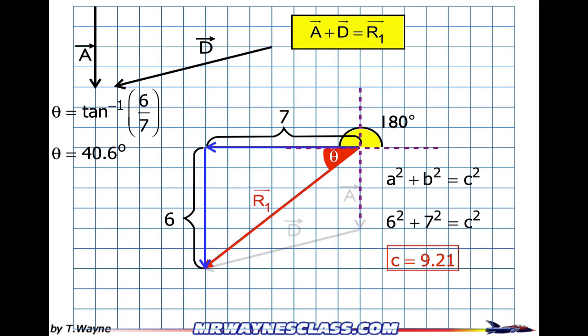So the total angle, which I'm calling Phi, is equal to 40.6 degrees plus the 180 degrees. So those two smaller angles make up the big angle, and that's going to be 220.6 degrees. So the direction is 220.6 degrees, and the magnitude is 9.21.